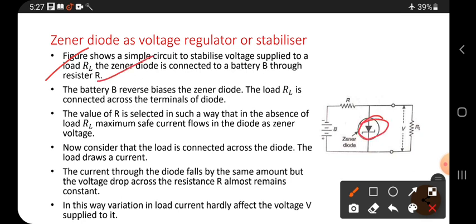See, it is a Zener diode. It is connected to a battery through resistor R, and RL is the load.